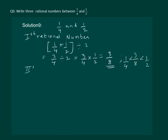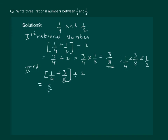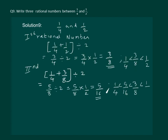To find the second number, we can take any of these pairs and find the mean. Let us choose 1 by 4 and 3 by 8 and try to find a number between them. We find the mean of 1 by 4 and 3 by 8: that gives us 5 by 8 divided by 2, which equals 5 by 8 multiplied by 1 by 2, that is 5 by 16. This is the second number lying between 1 by 4 and 1 by 2, as 5 by 16 lies between 1 by 4 and 3 by 8.